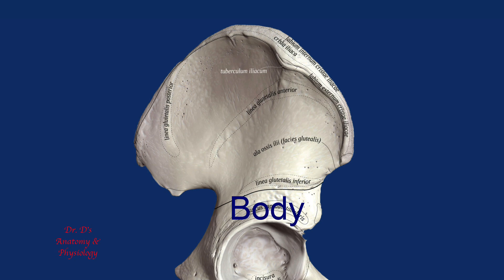This is an important part of the bone because it provides the platform that enables movement of the lower limb. But you can't have movement without muscles. Above the body, the ileum expands to provide a broad surface for muscle attachment. This expanded part of the ileum is called the ala, which simply translates into wing.